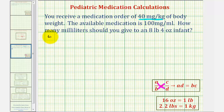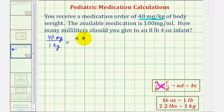So we'll have 40 milligrams per one kilogram must equal the number of milligrams for the infant, which we'll call X milligrams per the weight, which is given as eight pounds, four ounces.